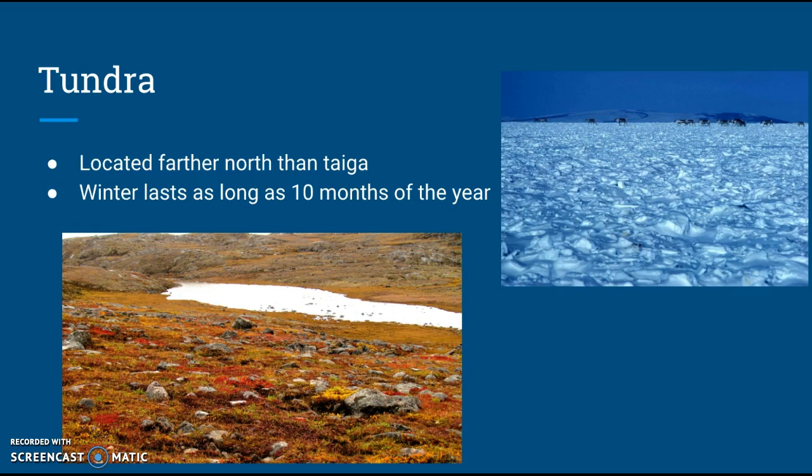Now we have tundra, which is going to be located even more north than the taiga. Here winter lasts as much as 10 months of the year. As you can see on the left picture, there's not that much plant life, lots of rocks, and the snow at the bottom of the picture is starting to melt away. On the right you can see tons of snow, and it looks like there's elk in the background. So a tundra is going to be a very cold area with lots of snow.